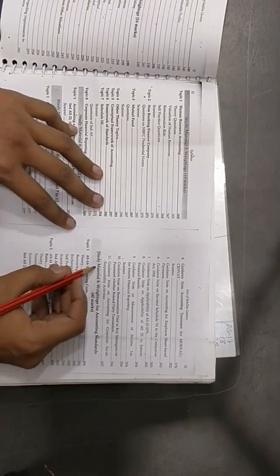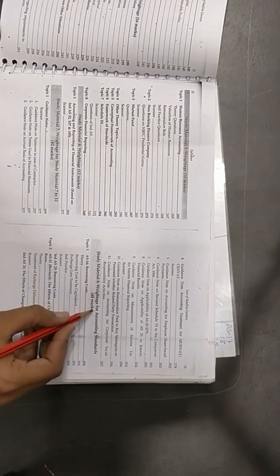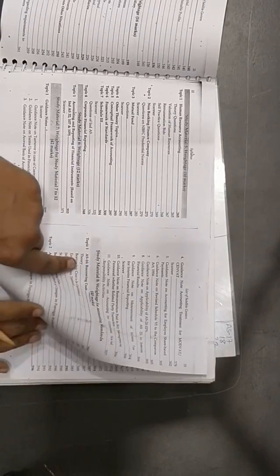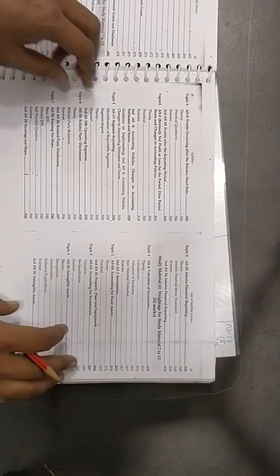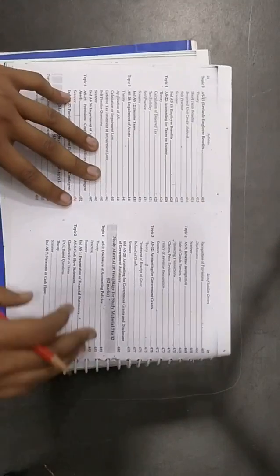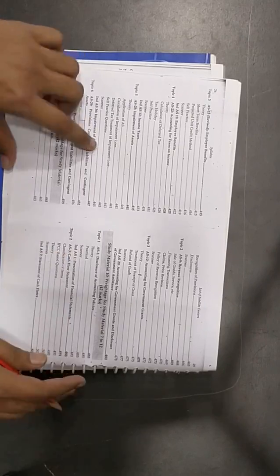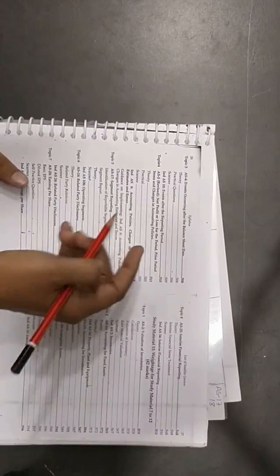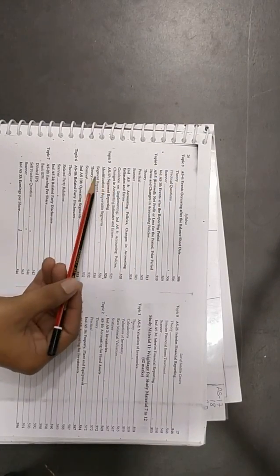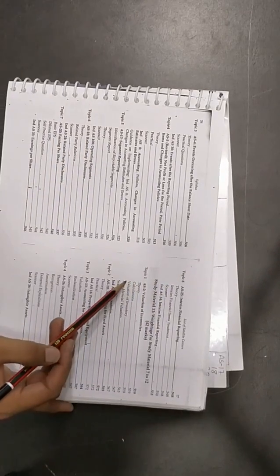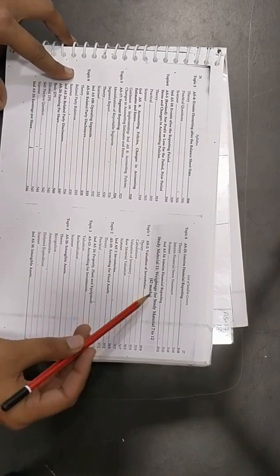Alright, so here we have the weightage of the marks. Study material weightage of accounting standards: 40 marks. And then I'll show you 42 marks, which includes AS1, AS3, AS4, AS5, then AS17, AS18, AS20, AS25.